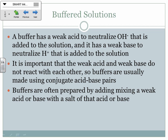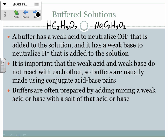A lot of times buffers are prepared by adding a weak acid or base and then a salt. An example is acetic acid, HC₂H₃O₂, and sodium acetate, NaC₂H₃O₂. This is a weak acid. If you put NaC₂H₃O₂ into water, it dissociates into Na⁺ and C₂H₃O₂⁻, and the acetate ion will sometimes pull an H off of water.